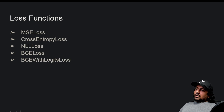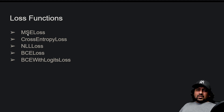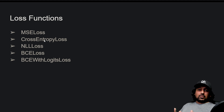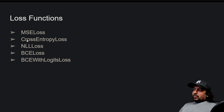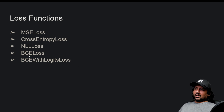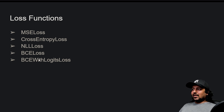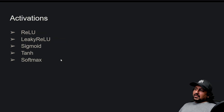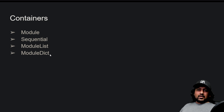Loss functions are also very important and are part of torch.nn. Available loss functions include Mean Squared Error loss, Cross Entropy loss, Negative Log Likelihood loss, Binary Cross Entropy loss with logits, and Binary Cross Entropy loss. Whenever you build a neural network you're optimizing some loss function, and these are already available — you can also write your own or use combinations. Knowing these layers, activations, and loss functions lets you solve more than 90% of deep learning problems.